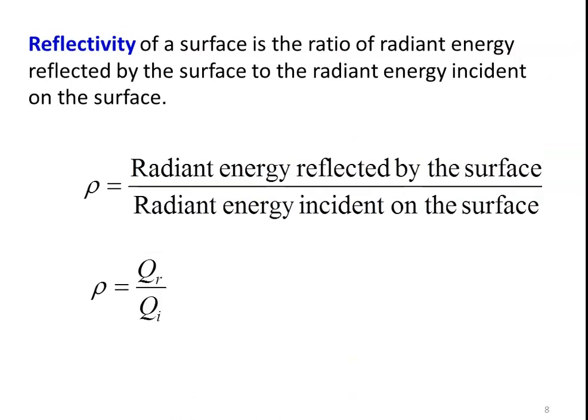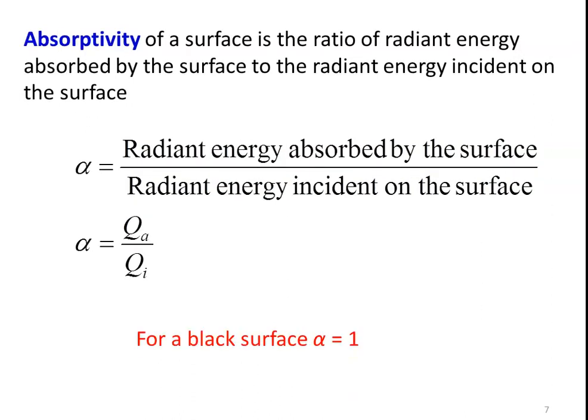The next property is absorptivity. Absorptivity of a surface is the ratio of radiant energy absorbed by the surface to the radiant energy incident on the surface. Alpha equals QA divided by QI. For a black body, alpha equals 1. This means the black surface absorbs all incident radiation — it is not reflecting or transmitting. The absorptivity of the black surface equals 1, which physically means the black body absorbs all incident energy without reflecting or transmitting.